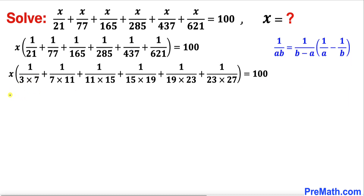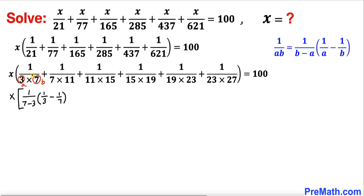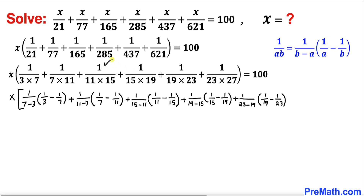Now let's simplify. Keeping x outside, we apply this formula to each fraction. The first term 1/(3×7) becomes 1/(7-3) × (1/3 - 1/7). The second term 1/(7×11) becomes 1/(11-7) × (1/7 - 1/11). We apply this to all the remaining fractions as well.